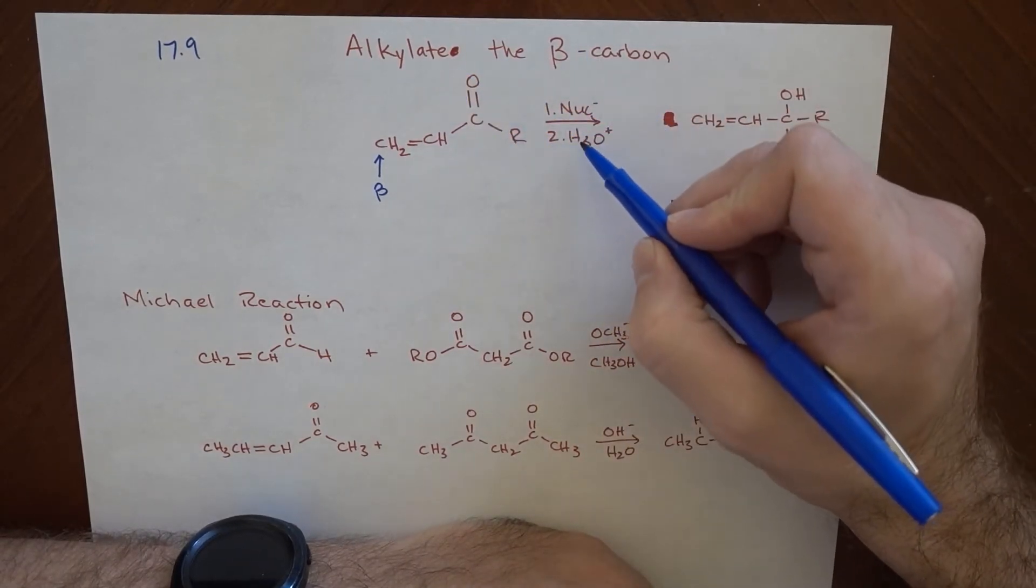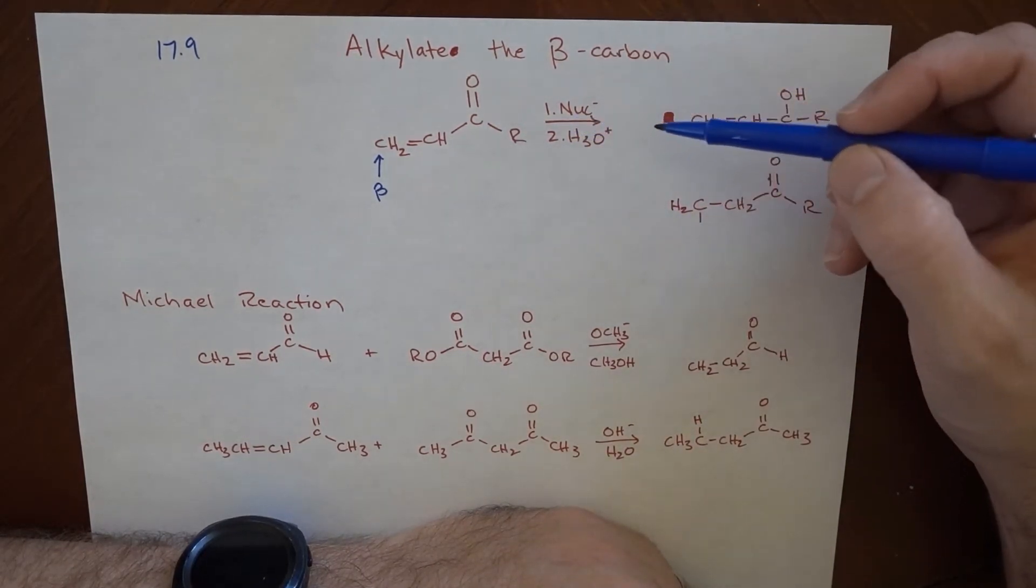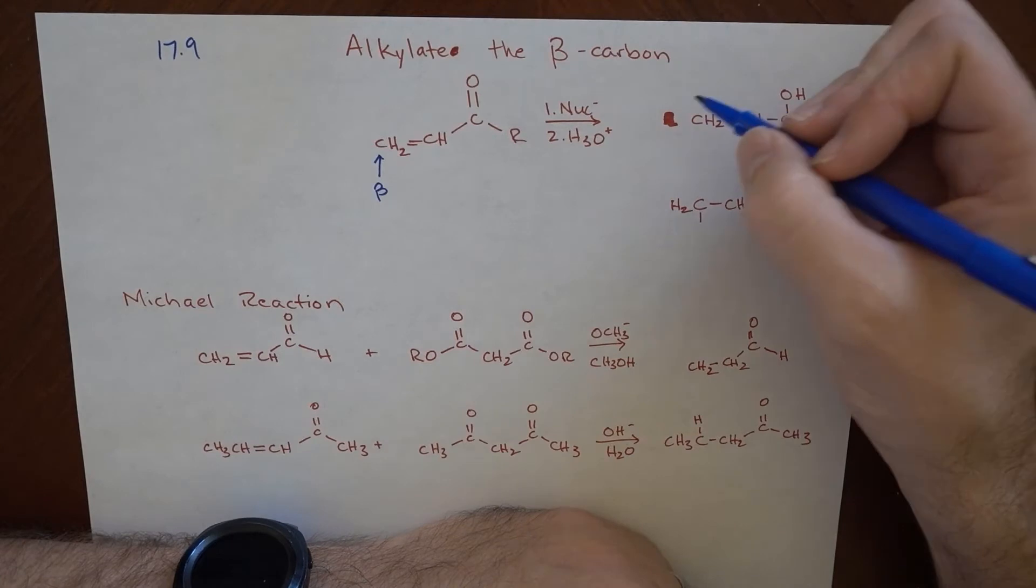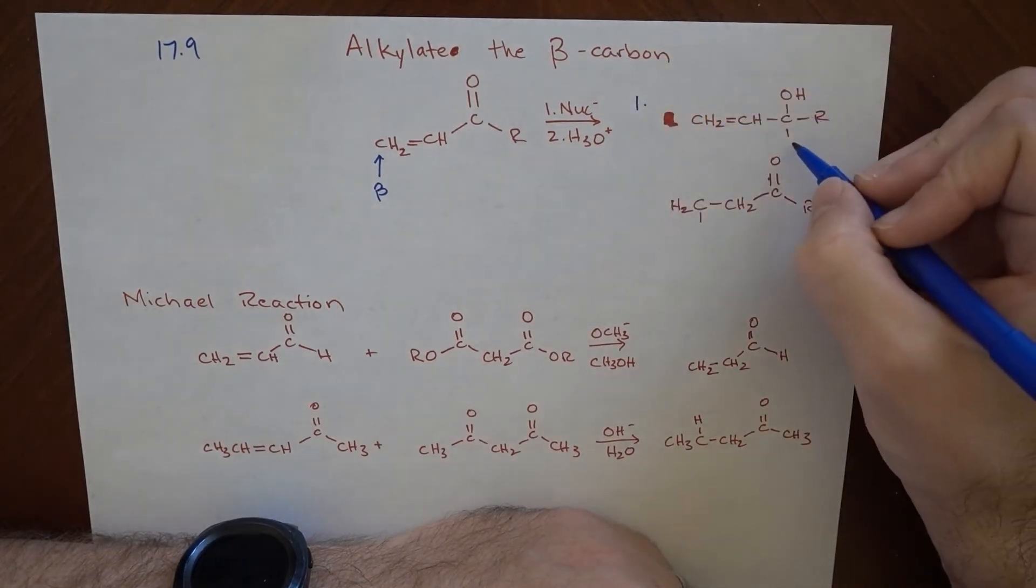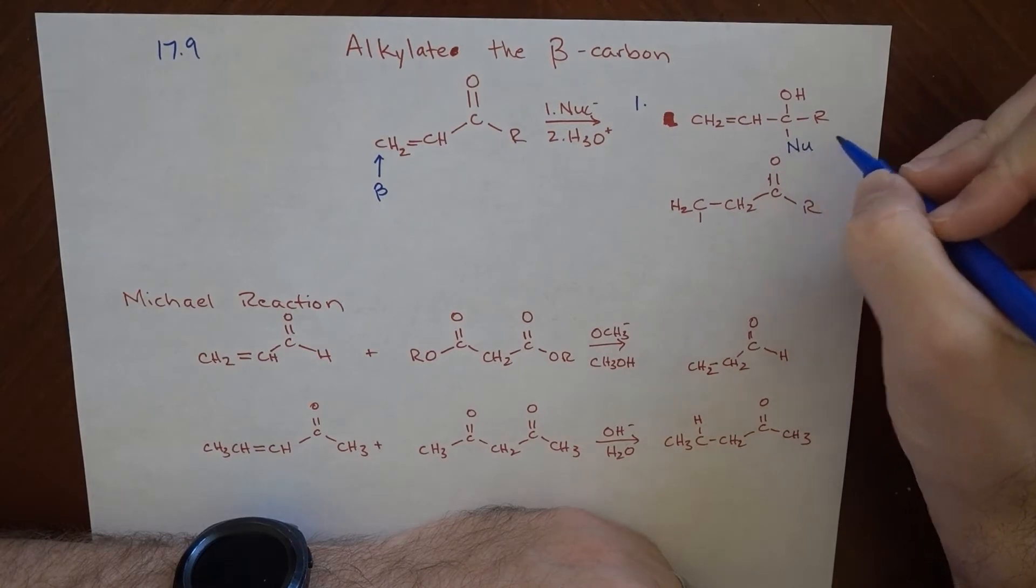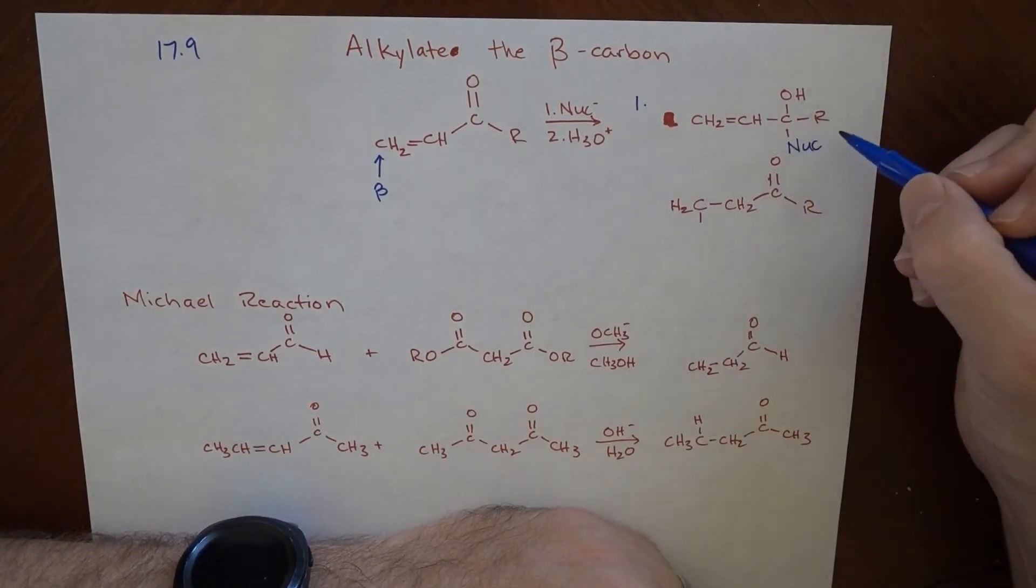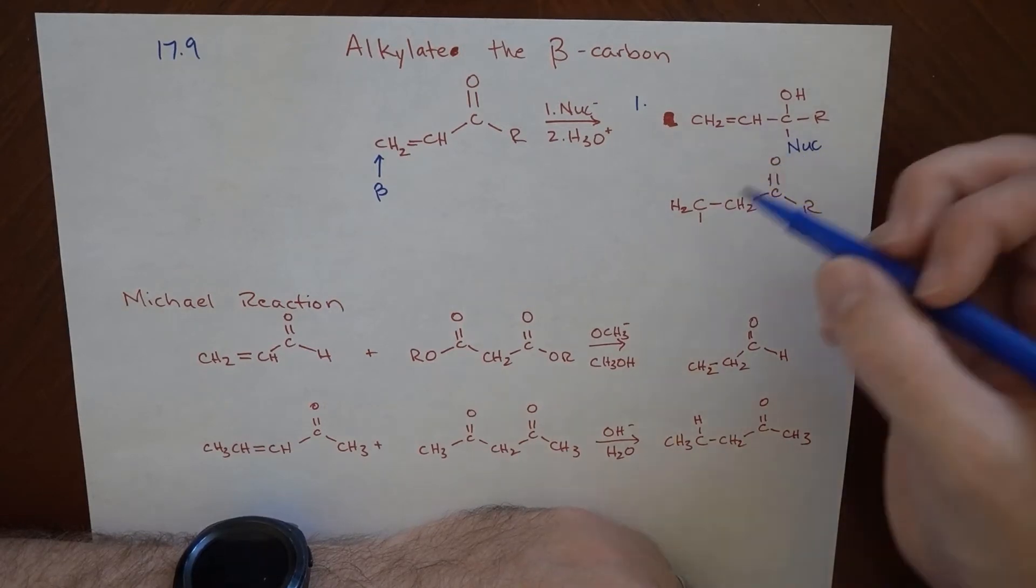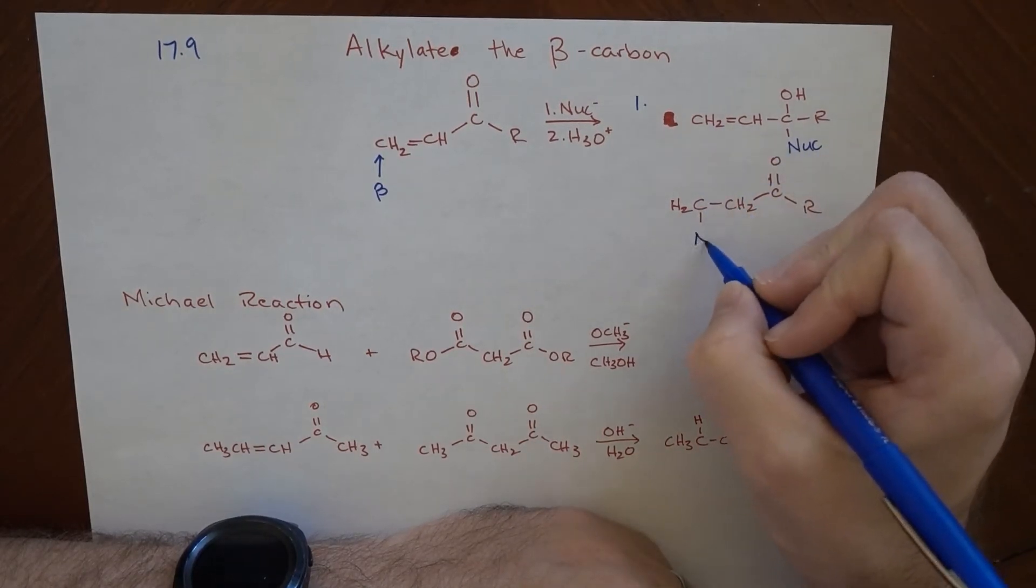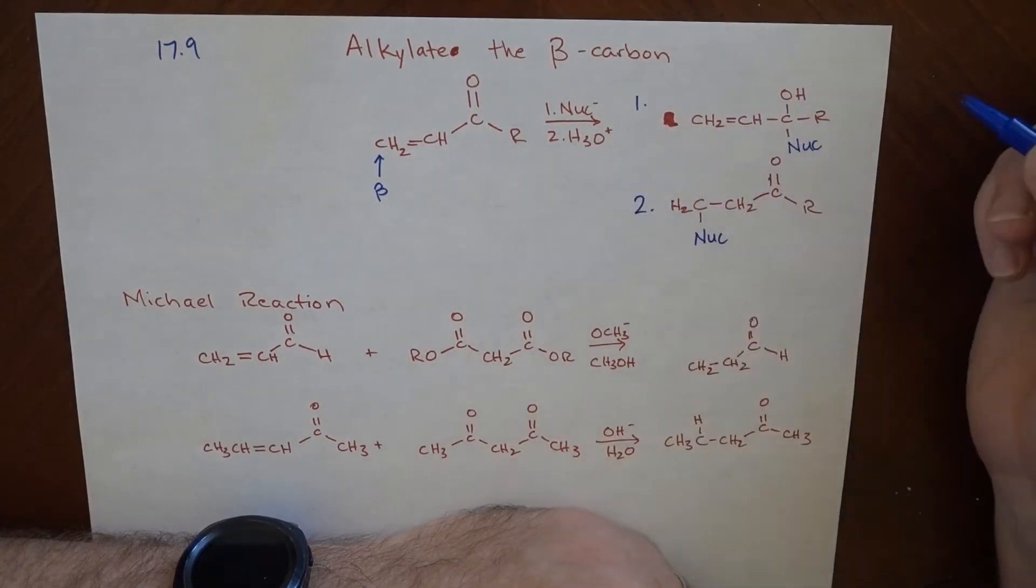So let's say there's some nucleophile in the presence of an acid, and we have a reaction take place. One of two things can happen. The nucleophile can add right here at the carbonyl carbon. And the second place that it could go is here at the beta carbon.